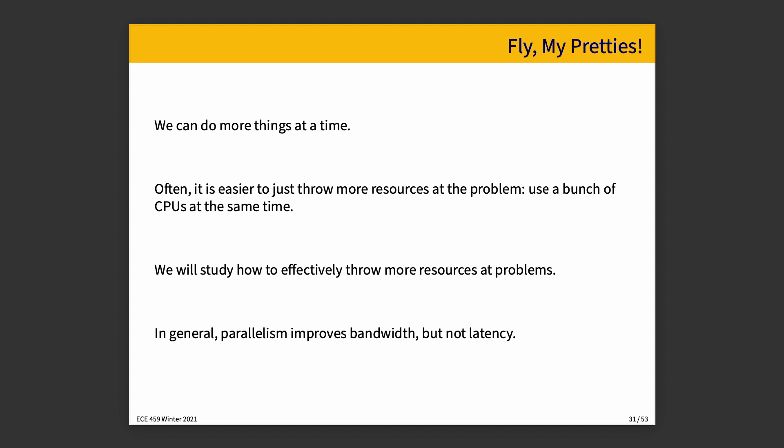We'll also talk about doing more things at a time — the parallelism approach. In addition to speeding up an individual item, we can do things in parallel, and it is frequently easy to just throw CPU resources at a problem. We'll study how to effectively throw more resources at such problems. Because CPU manufacturers have difficulty making individual cores faster but are giving us more cores, parallelism is congruent with the hardware available in general.